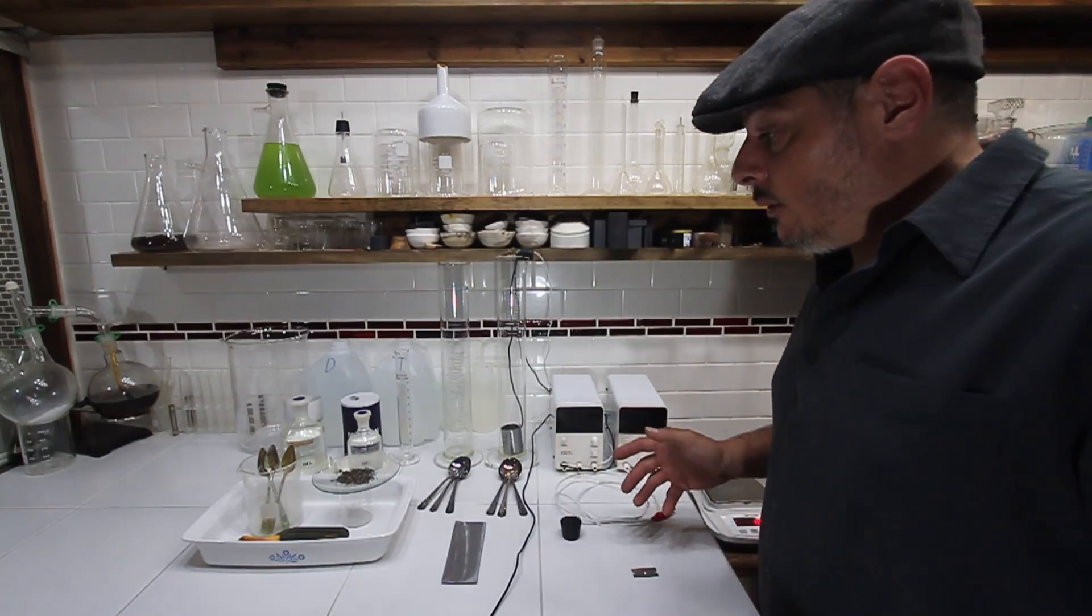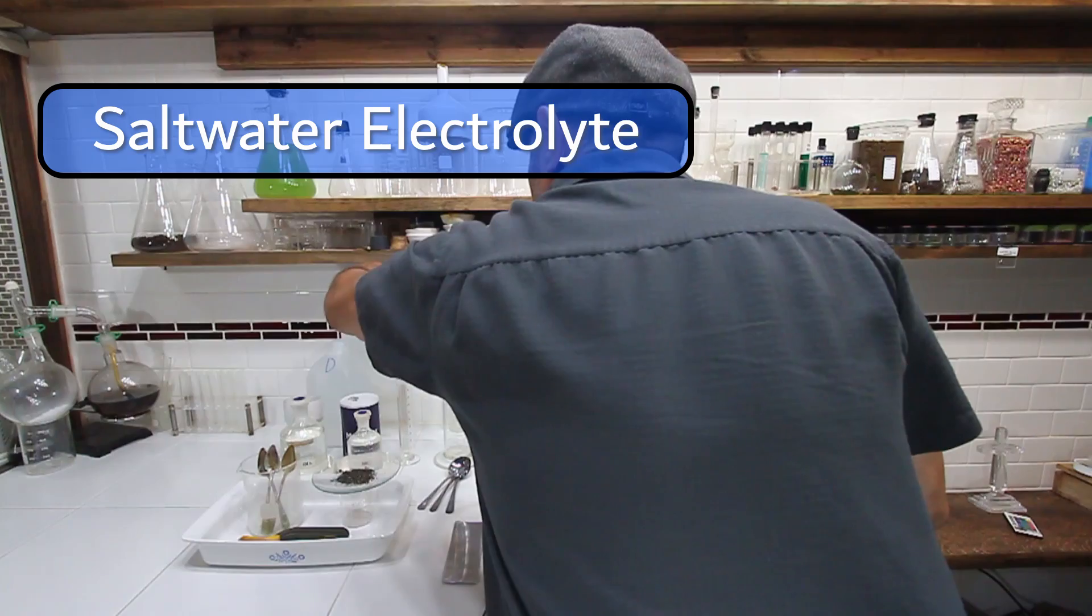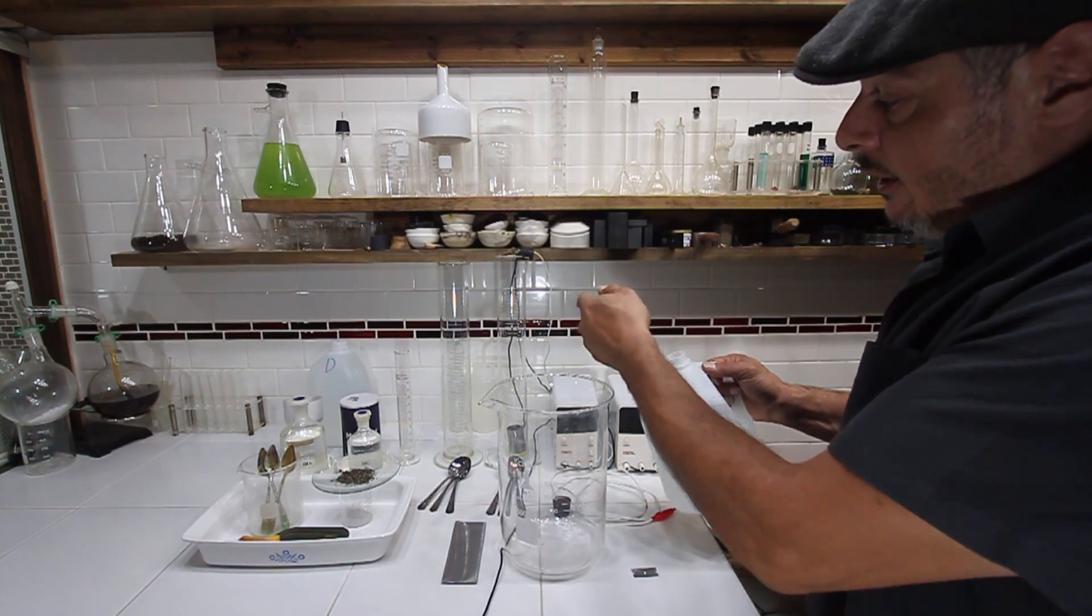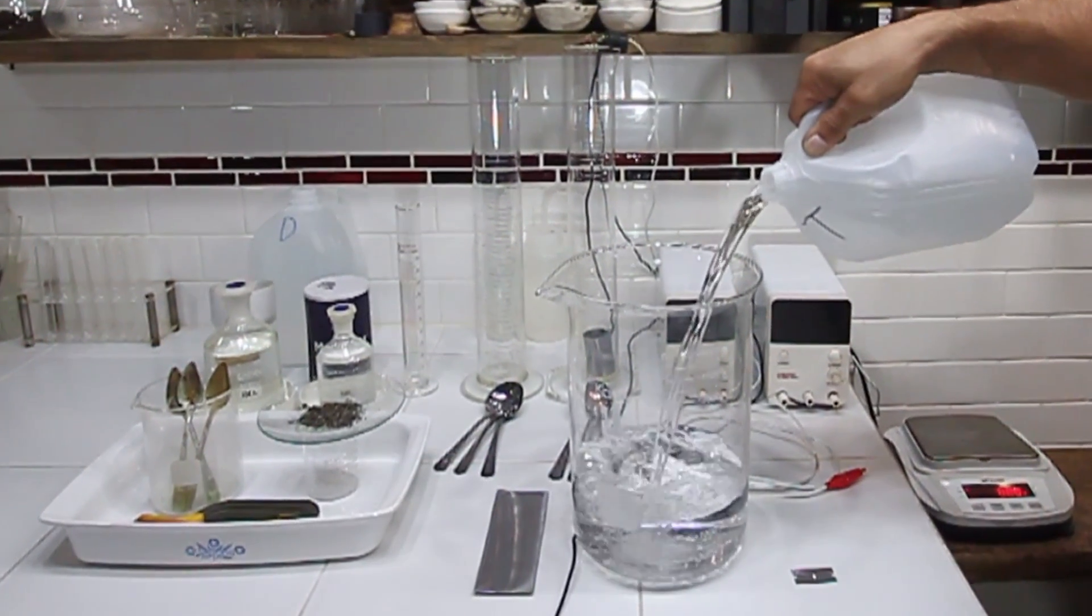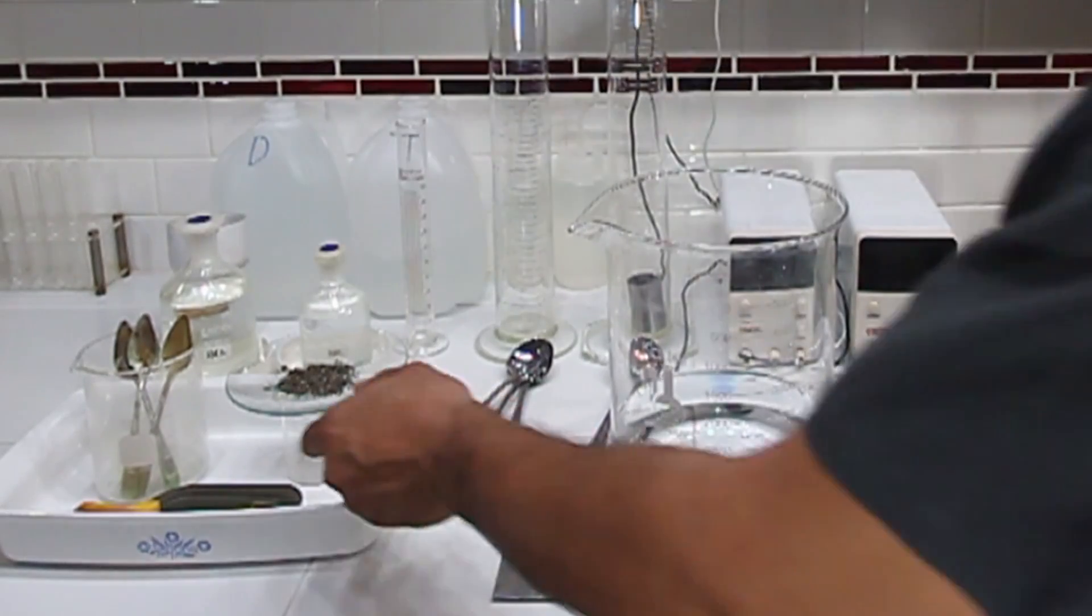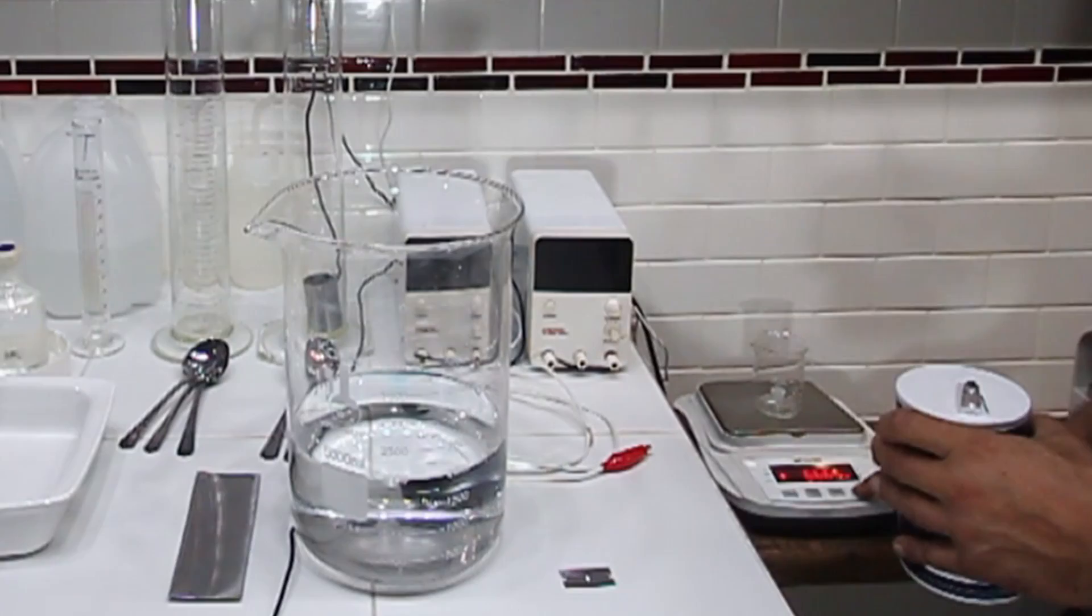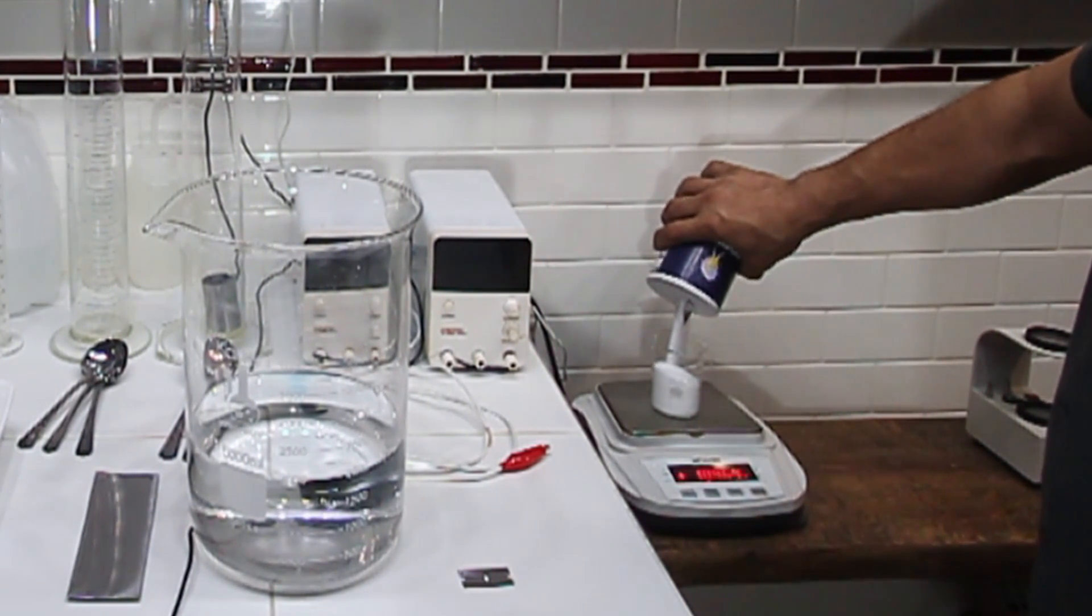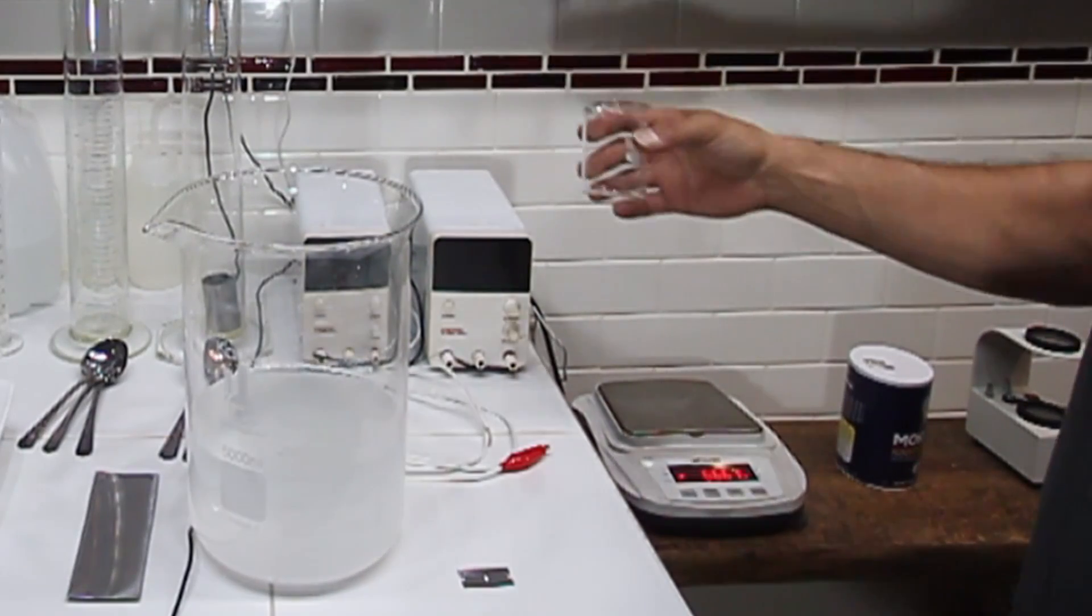First thing we need to do is make a saltwater bath. I'm just using tap water for this, so I'm going to do about 800 milliliters in each beaker. I'm actually going to do two liters here. Then we're going to measure out 200 grams of salt—100 grams of salt per liter. So 200 grams of table salt and two liters of water.